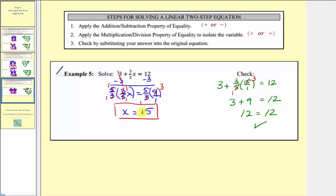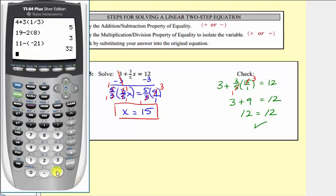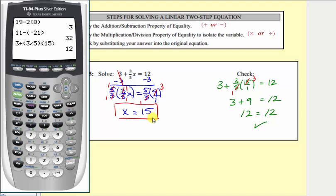Because this is true, our solution is correct. On the calculator, we verify that 3 + (3/5) × 15 = 12, which it is.